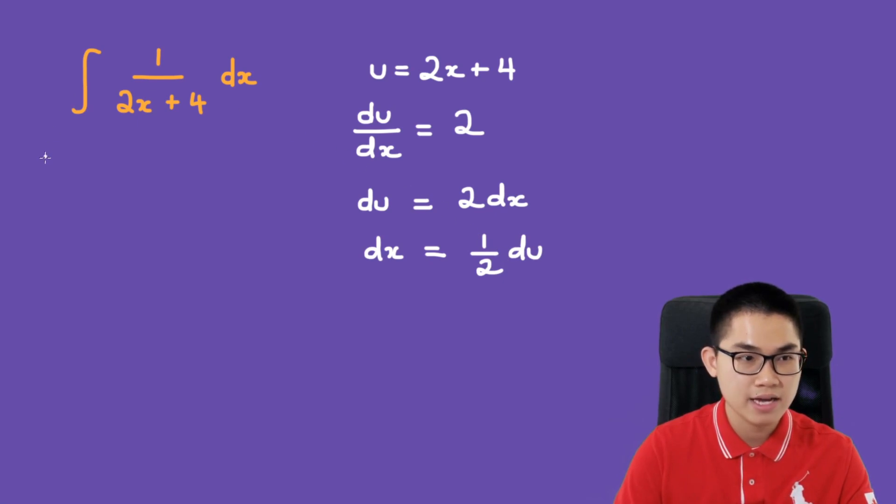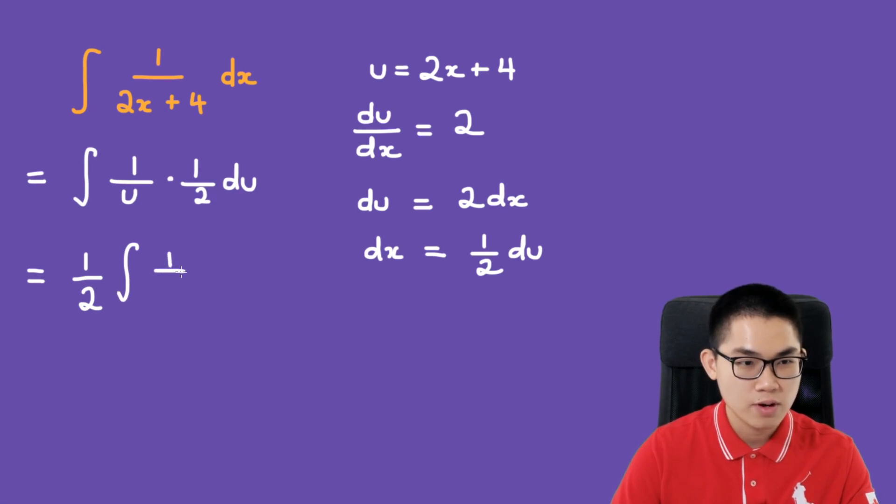Now we can substitute it back into this integral. We have the integral of 1 over u, and dx is 1 over 2 times du. Since 1 over 2 is a constant, we can move it outside of the integral, giving us 1 over 2 times the integral of 1 over u du.